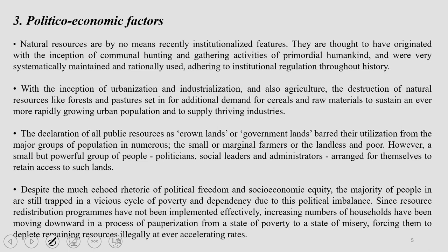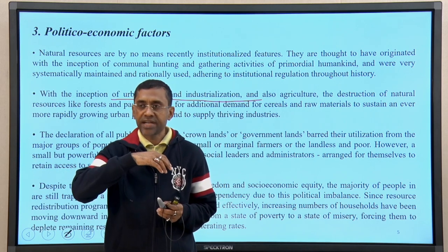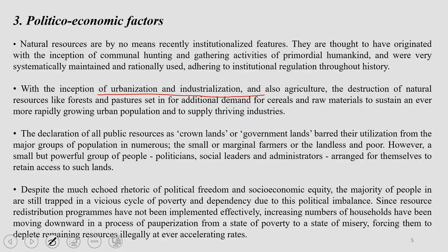With the inception of industrialization, urbanization, and intensive agriculture, there has been a lot of destruction of natural resources like forests and pastures, because of demand for food crops like cereals and raw materials like cotton. Based on population demands, land use was significantly modified during industrialization and intensive agriculture. Declaring all public resources as crown lands or government lands meant only a few privileged people were allowed to utilize those resources, generating differences and conflict in society.